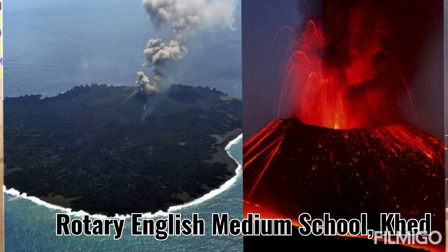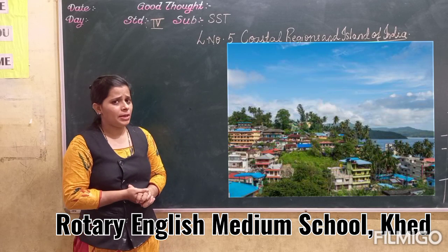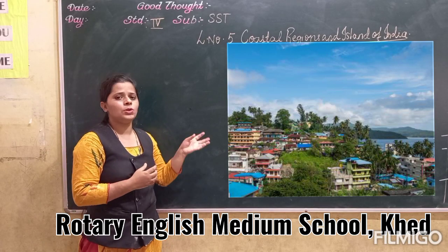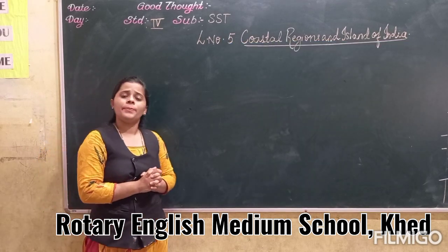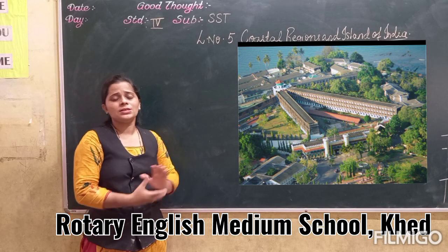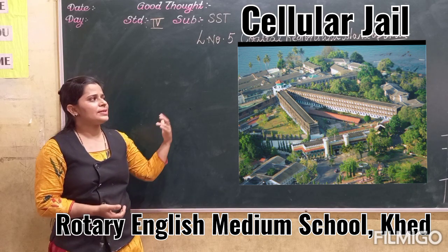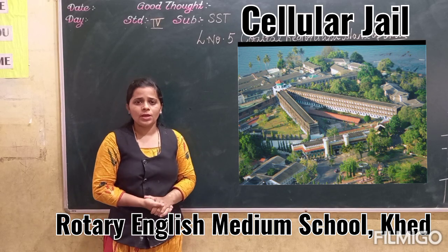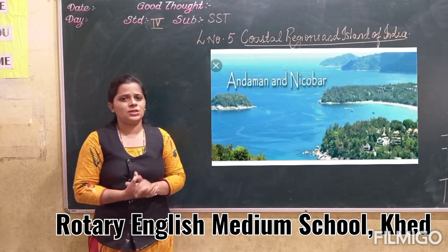The islands are covered by thick forest. Only some islands are inhabited — meaning a place where people live. Here you will see beautiful beaches, and the Cellular Jail is a tourist attraction. During British rule, prisoners were sent to this Cellular Jail. Fishing and farming are the main activities on this island.